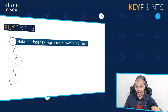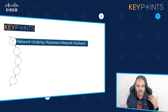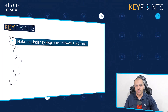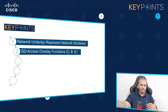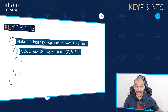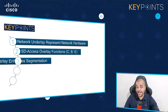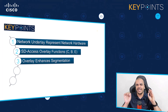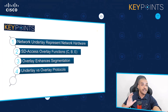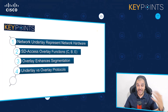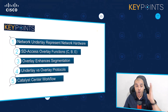Key points for today: Network underlay represents a bunch of network devices connected together with traditional protocols — routers and switches with traditional protocols — this makes up your underlay. Whereas the overlay in the SD Access fabric is a bunch of overlay functionalities: the control plane node, the border node, and the edge node. And if you want to add the wireless, the controller and the access point as well. Segmentation is the most important piece of information that the SD Access overlay is going to give you, thanks to macro and micro segmentation. There are underlay protocols and completely separate overlay protocols which are going to enhance the network experience, thanks to the Catalyst Center and the five-step workflow.